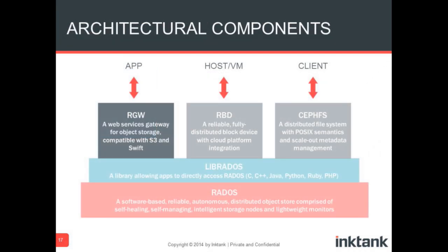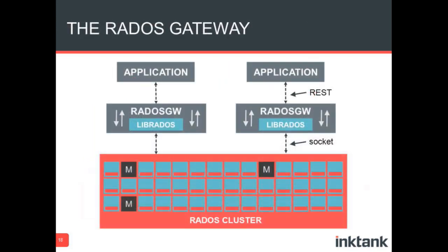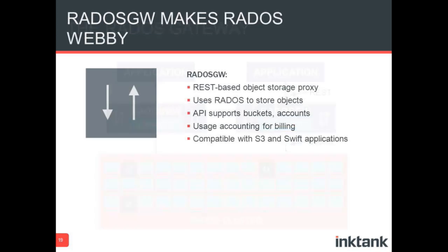One of those interfaces is the RADOS Gateway, built on top of LibRADOS. RADOS Gateway is essentially a REST interface on top of RADOS. If you want to store objects into the RADOS cluster using REST — using the S3 or Swift interfaces — you run RADOS Gateway. You can run multiple of them behind load balancers. They speak REST out of the top, and speak that efficient wire protocol at the bottom. This is what DreamHost used to build DreamObjects, their S3-competitive product. All of its buckets, accounting, and access management are also stored in RADOS, so these RADOS Gateways are ephemeral. It's compatible with S3 and Swift applications, and it's integrated into Keystone as a drop-in replacement for Swift in OpenStack.